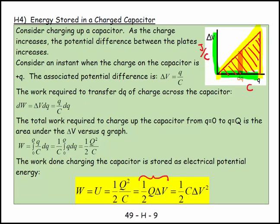I know the equation for a triangle is half the base times the height, so I can very easily get this equation: ½QΔV. I can also do it using calculus. Consider charging up a capacitor. As the charge increases, the potential difference between the plates increases. Consider an instant when the charge on the capacitor is Q. The associated potential difference is ΔV = Q/C.